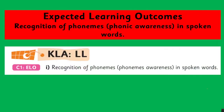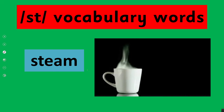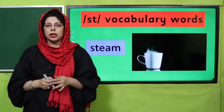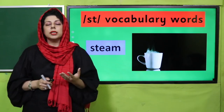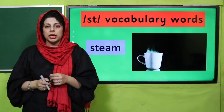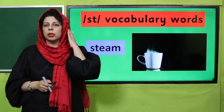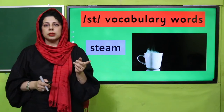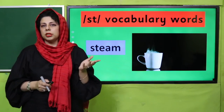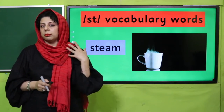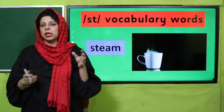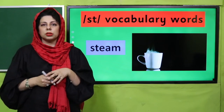The expected learning outcome says: recognition of phonemes in spoken words. Hum phonemic awareness ki baat kar rahe hain, yani bache jin awazon ko sunein unko sun ke pahchan sakein. Phonemic awareness is different — phonic means when they see and start writing sounds, but phonemic awareness is when they hear them, they can identify them and link and relate them.